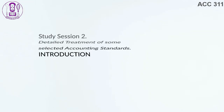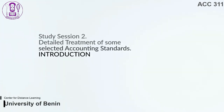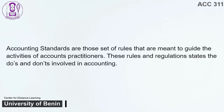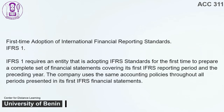Study Session 2: Detailed Treatment of Some Selected Accounting Standards. Introduction. Accounting standards are those set of rules that are meant to guide the activities of accounting practitioners. These rules and regulations state the dos and don'ts involved in accounting. 1. First Time Adoption of International Financial Reporting Standards — IFRS 1. IFRS 1 requires an entity that is adopting IFRS standards for the first time to prepare a complete set of financial statements covering its first IFRS reporting period in the preceding year. The company uses the same accounting policies throughout all periods presented in its first IFRS financial statements.